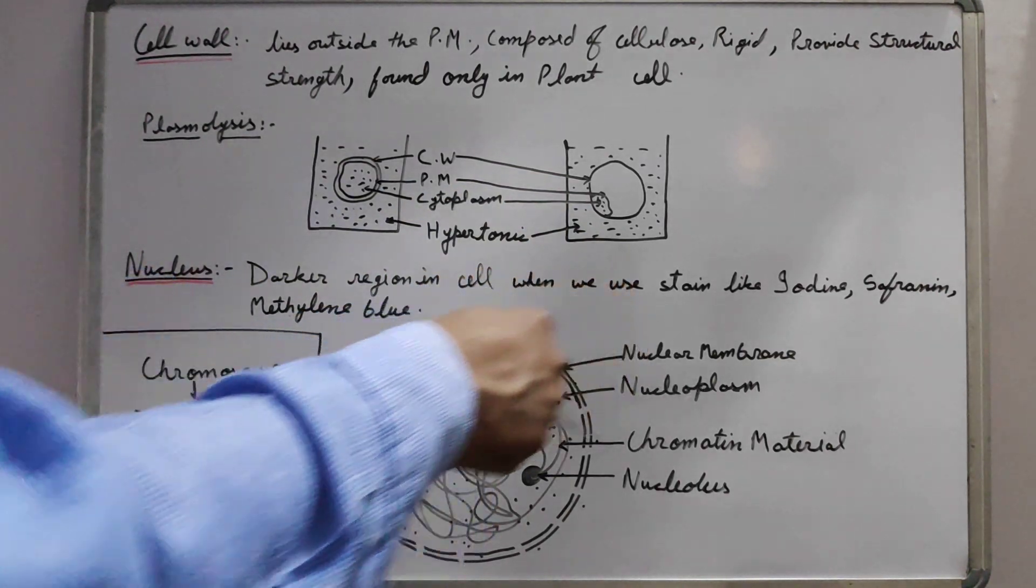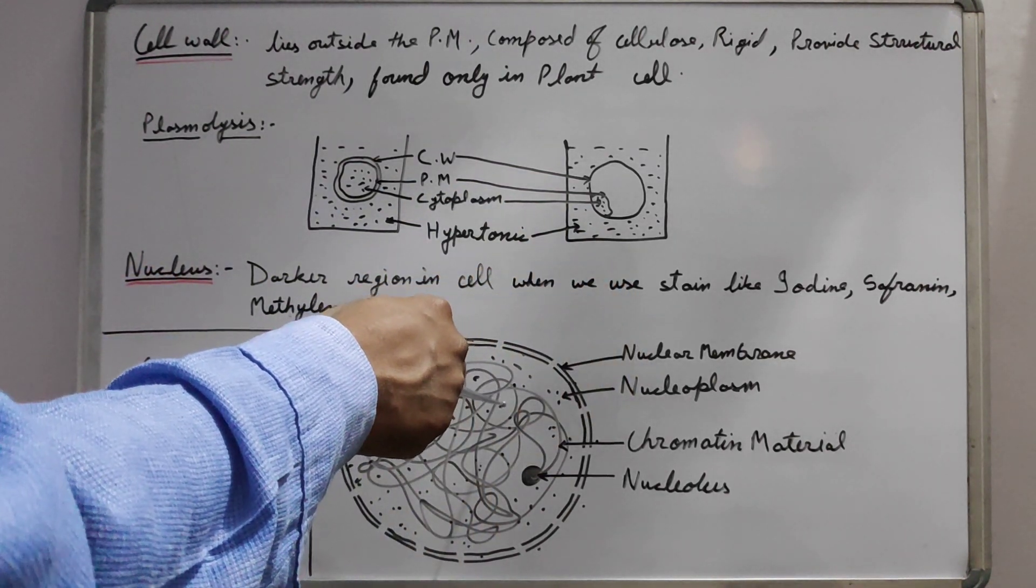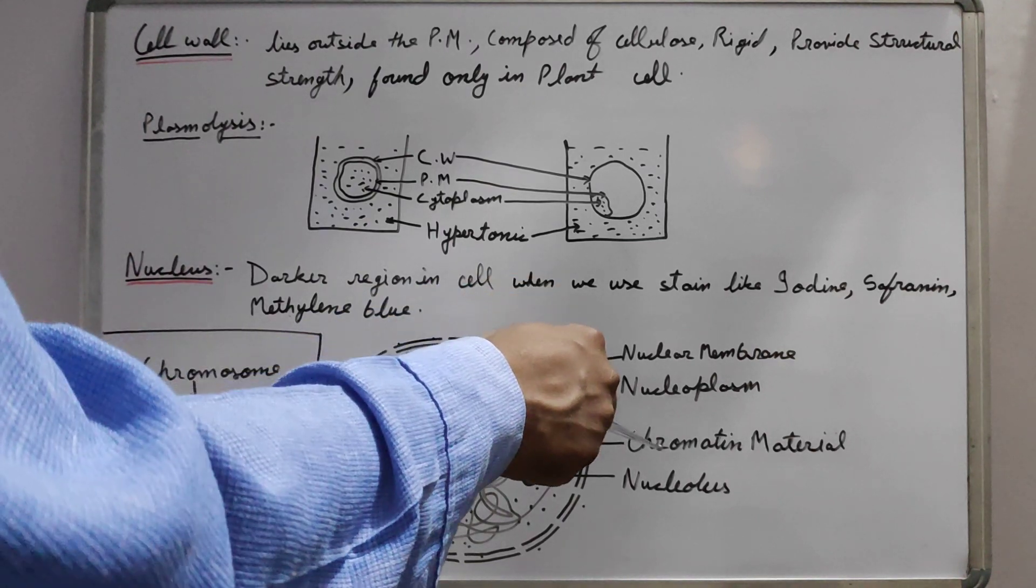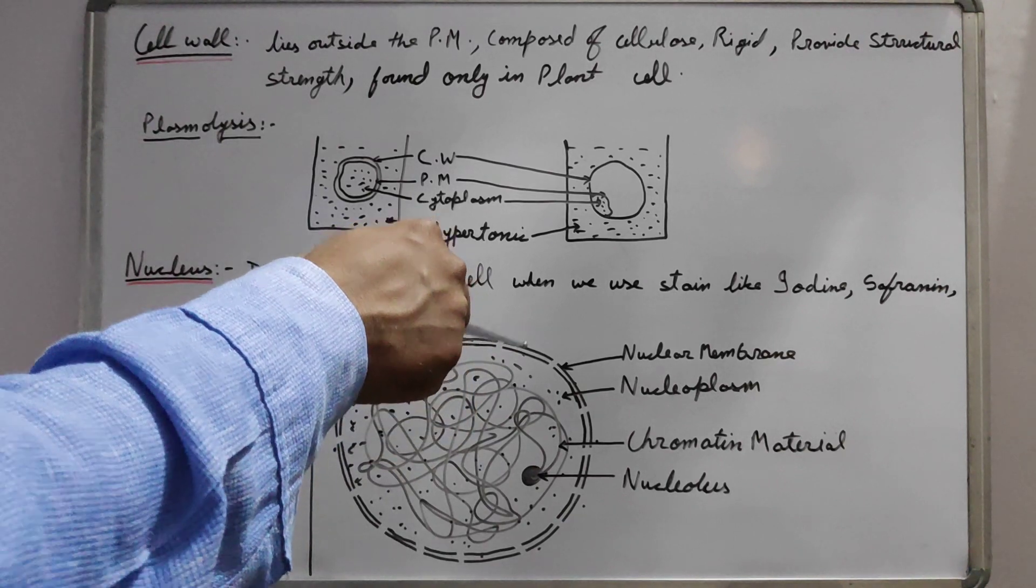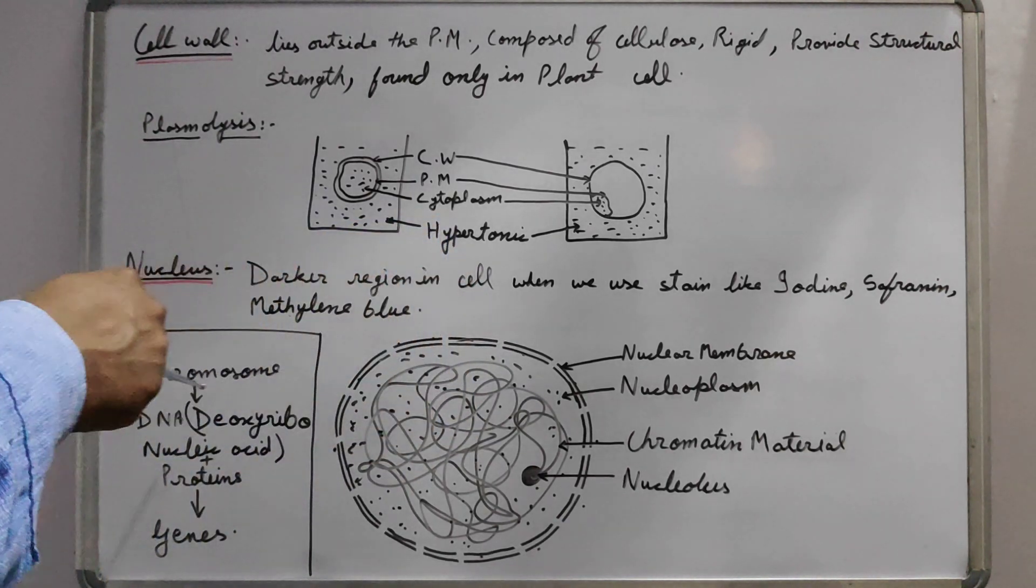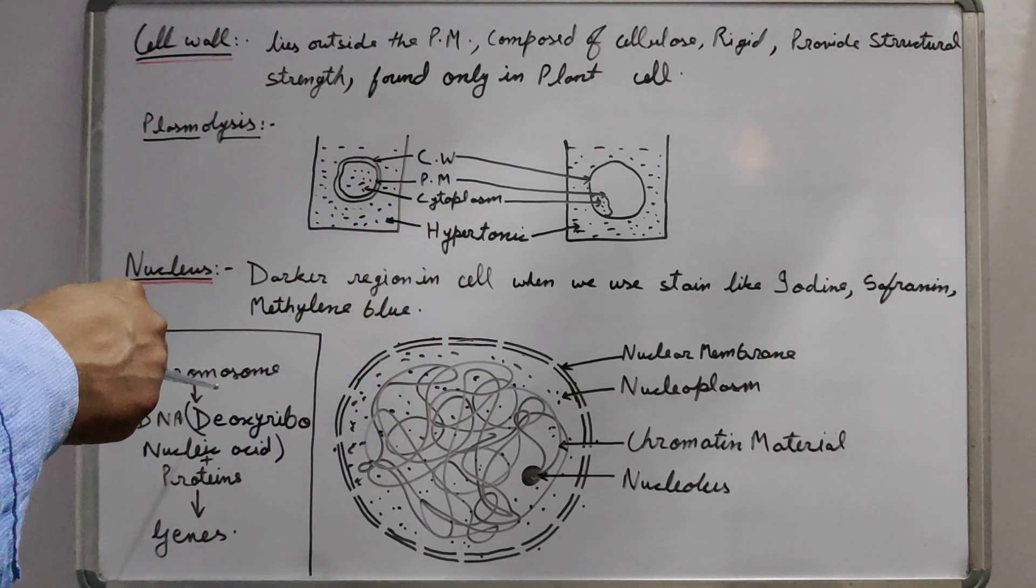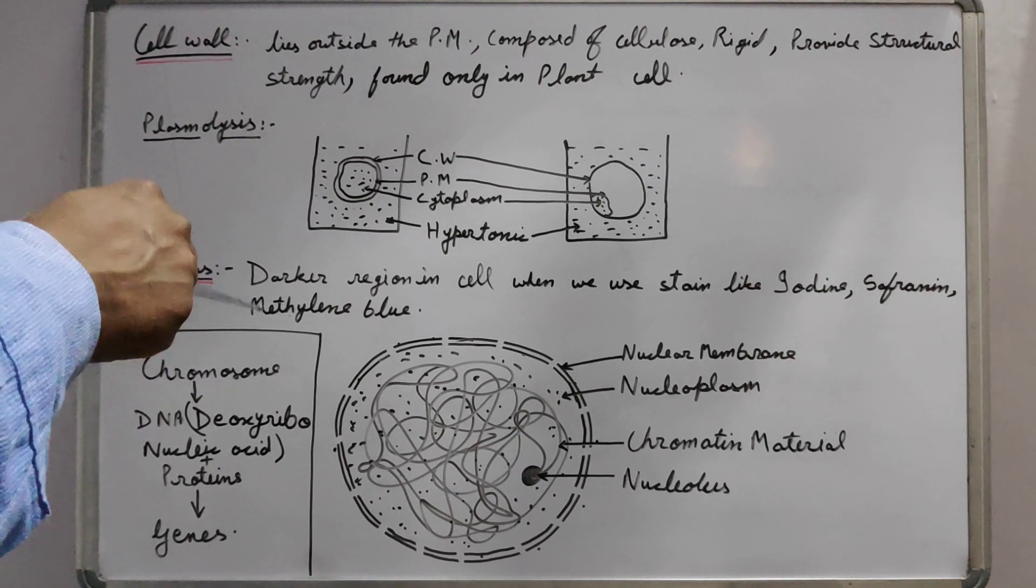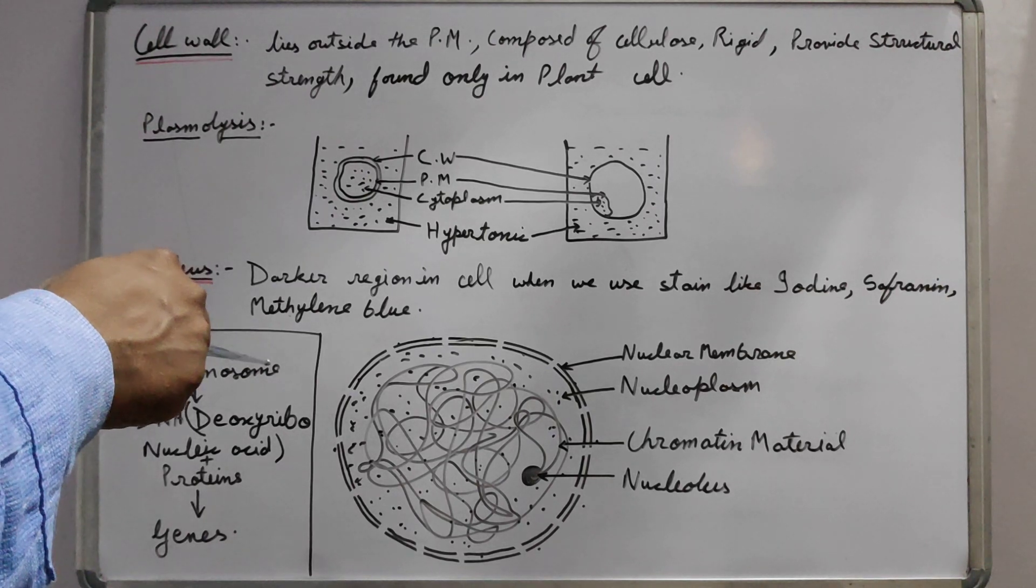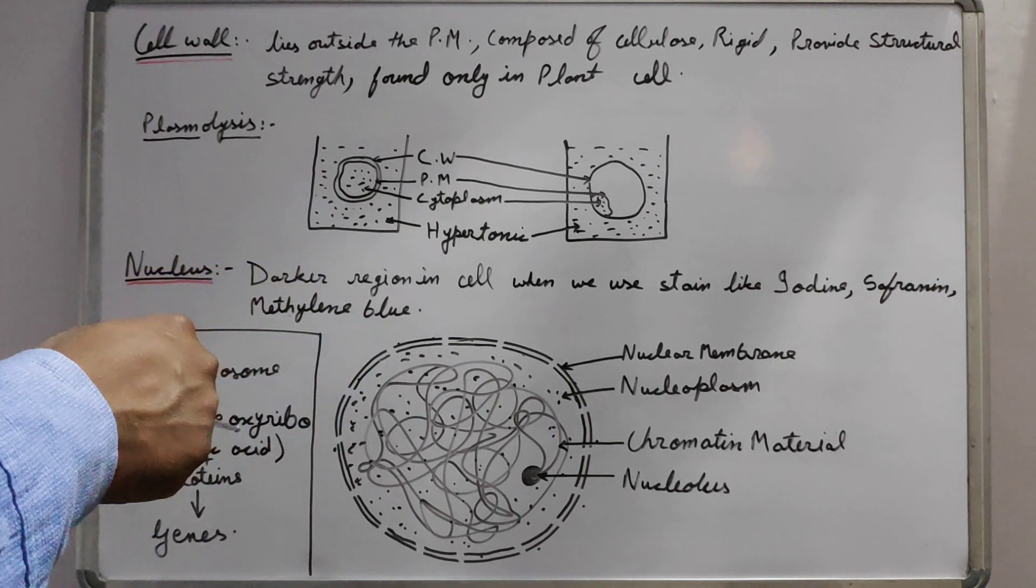In the nucleoplasm, we have the chromatin material which is basically genetic material. And that genetic material at the time of cell division will convert into chromosomes. And these chromosomes are basic structures for heredity, that means to transfer the characters from parents to the next generation.